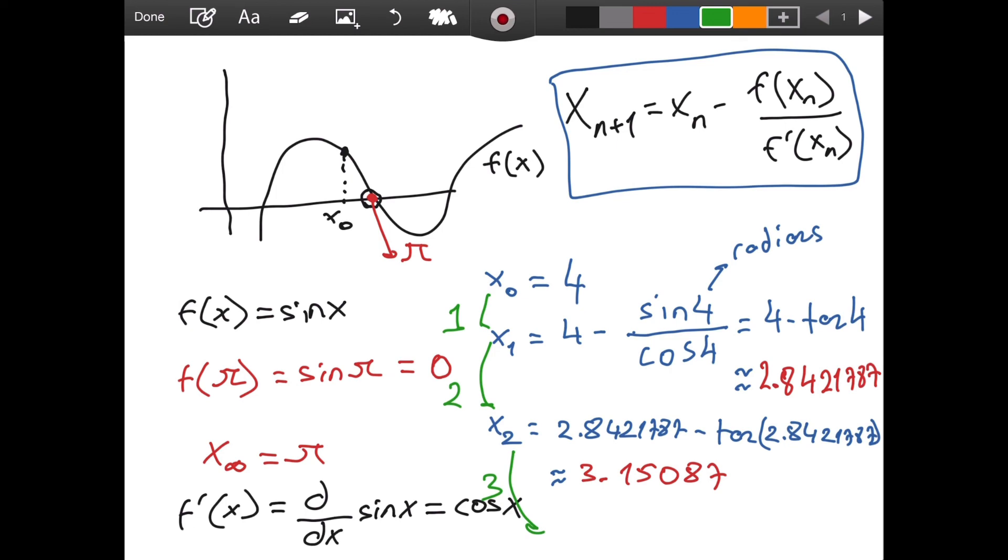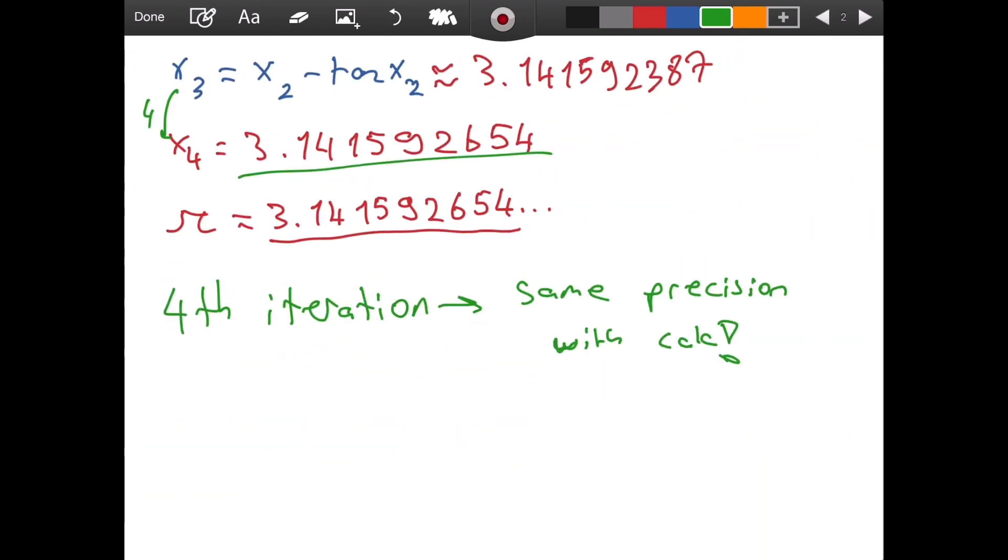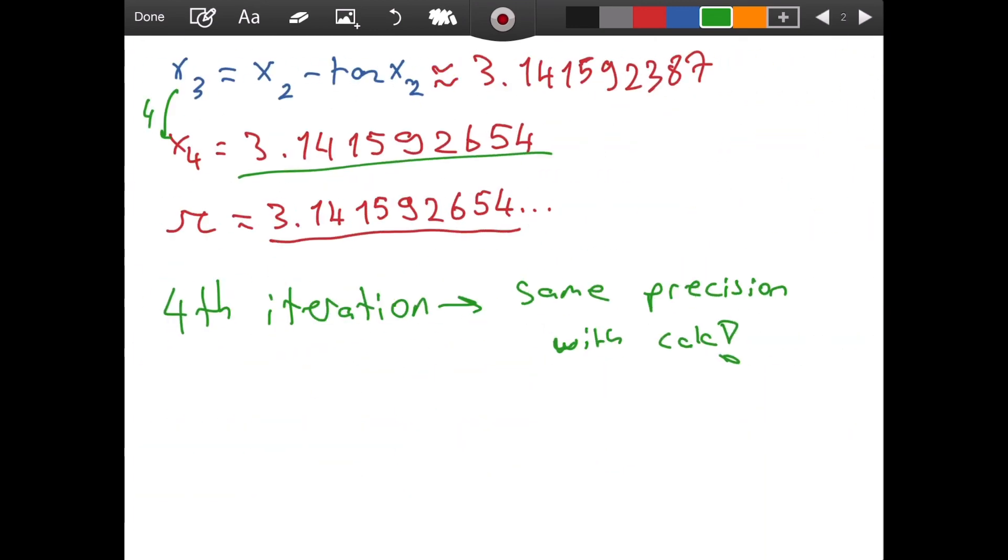And you could actually pretty much use this to approximate any irrational number. You would just need to find a function that has that irrational number as one of its roots, and then you can use Newton's method, and after a couple of iterations you will be done. This is it for this video. I hope you found this video helpful. Take care, and if you have any comments please write them in the comment section below. Until then, take care.